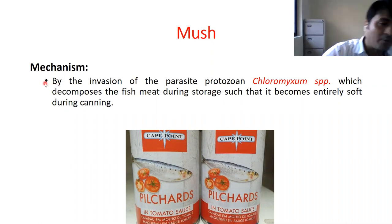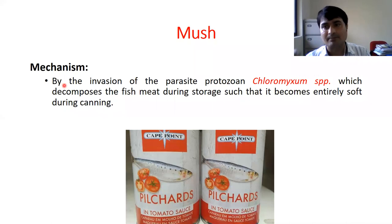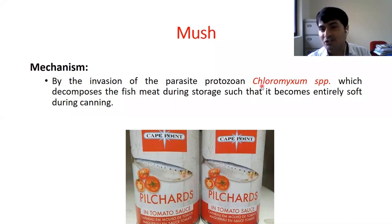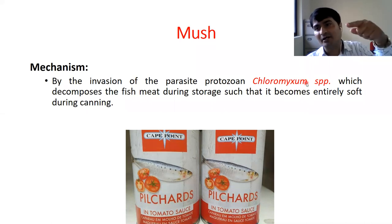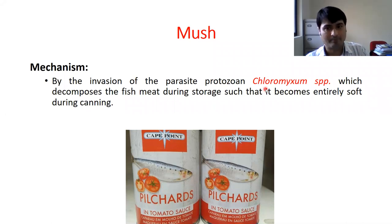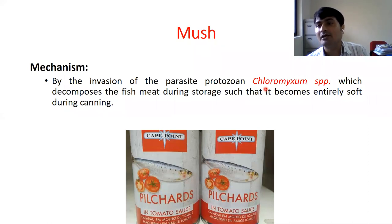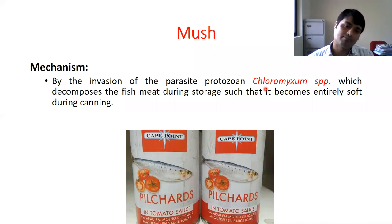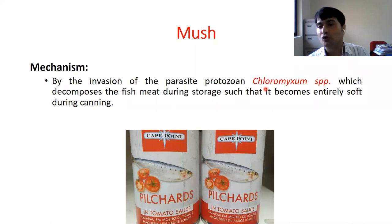You can see the mechanism here — how mush is forming. Because one protozoan is responsible for mush formation. That parasitic protozoan is basically Chloromyxum species. It invades the fish muscles, and during the storage period this meat is decomposed inside. So it will become entirely soft during the canning process.